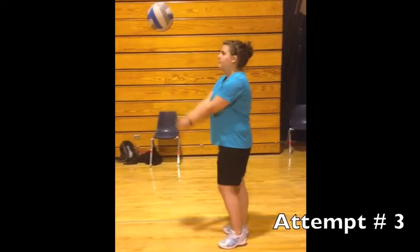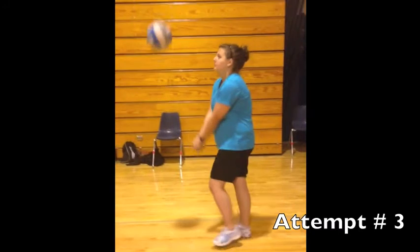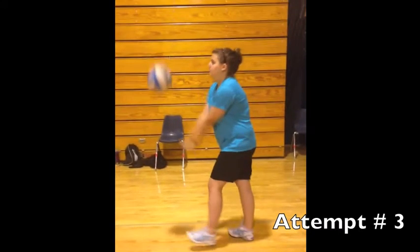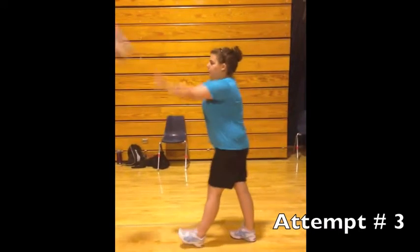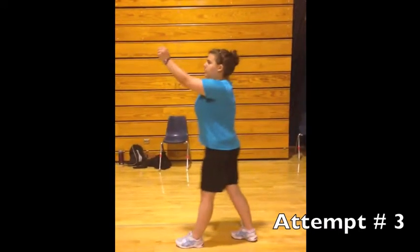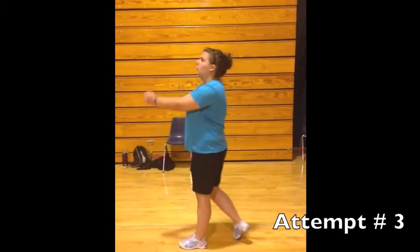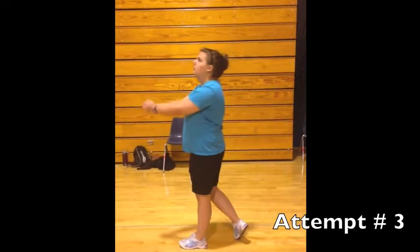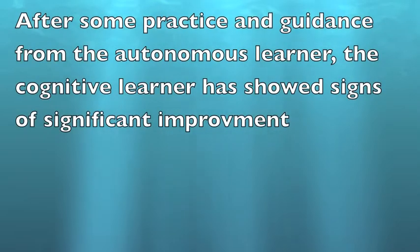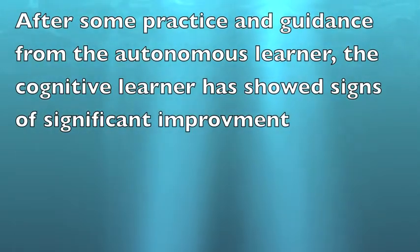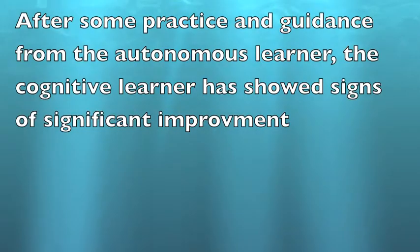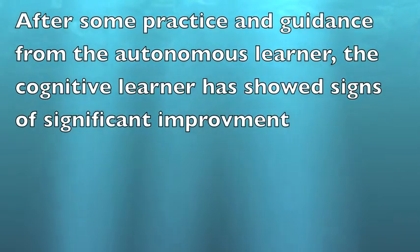In the third attempt, her form is very stiff from not bending her knees, and she seems to be focused on the area around her rather than the volleyball. After some practice and guidance from the autonomous learner, the cognitive learner has shown signs of significant improvement.